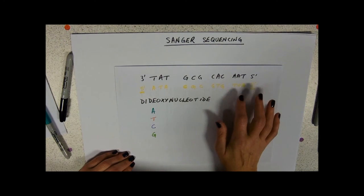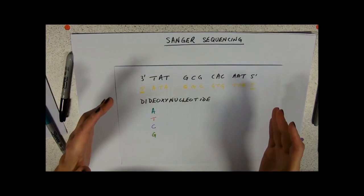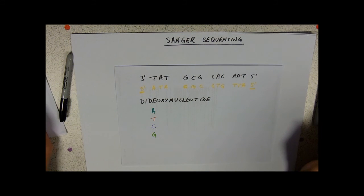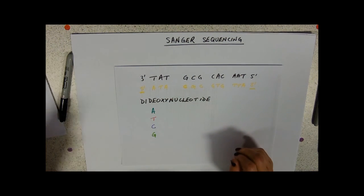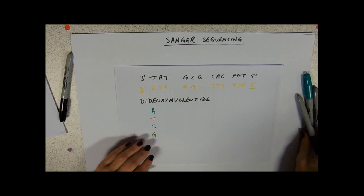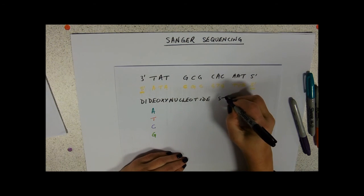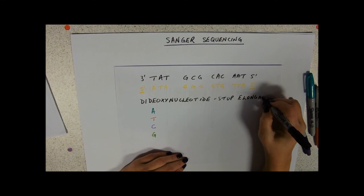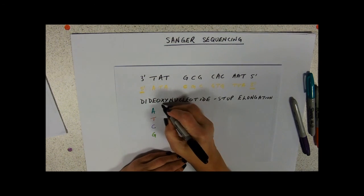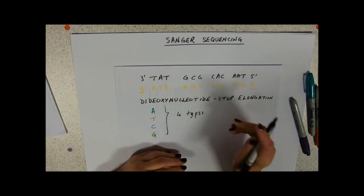So you really want it to stop randomly at wherever the bases are and get a mixture of different lengths that tells you where all of the A's are on your strand. Now obviously they're doing this for hundreds of bases and I'm doing it for 12 just as an illustration. These dideoxynucleotides, what's their role? They stop the elongation and these are our four types that we've got available.